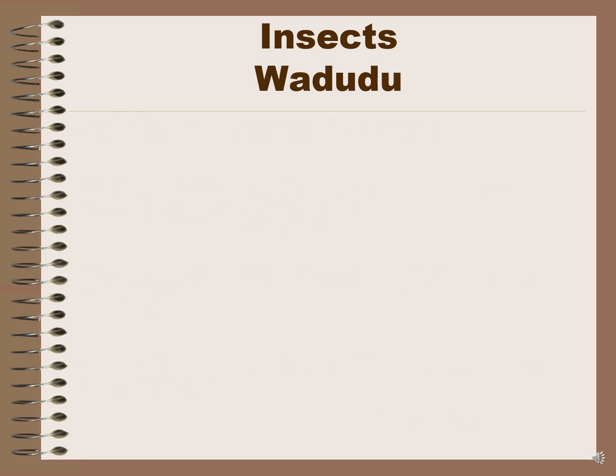'Sisimizi' or 'siafu' in English is ant or ants. Sisimizi and siafu are different insects but they have the same name in English. They don't have a singular or plural distinction — sisimizi remains sisimizi whether it is one or more than one, and the same applies to siafu.